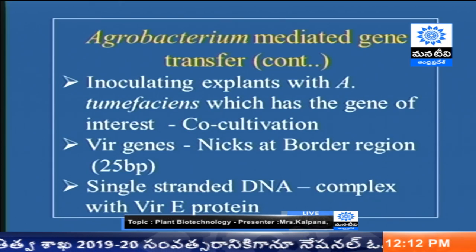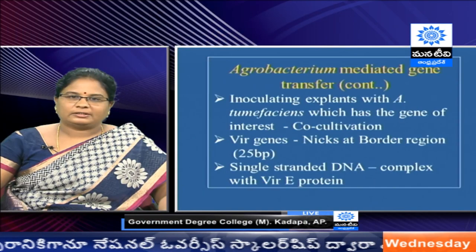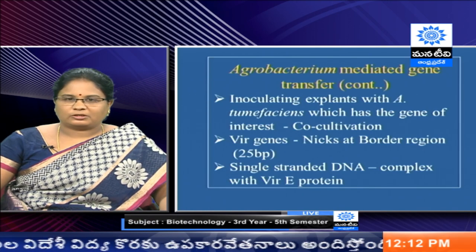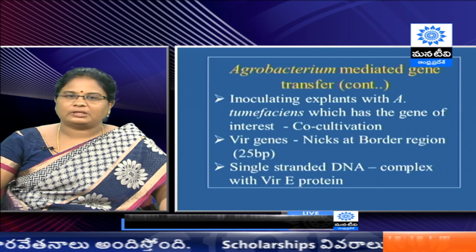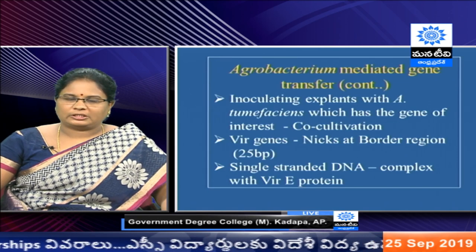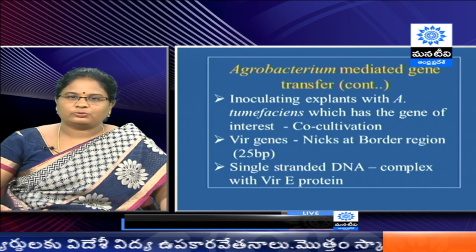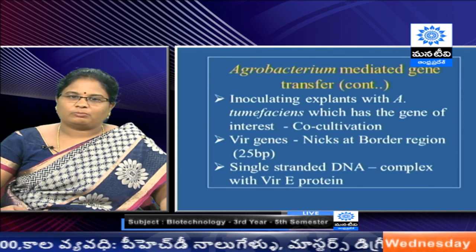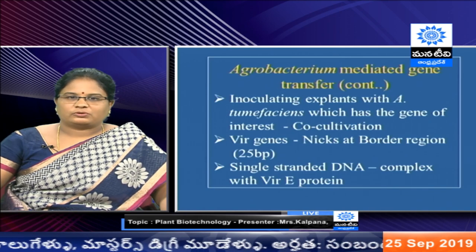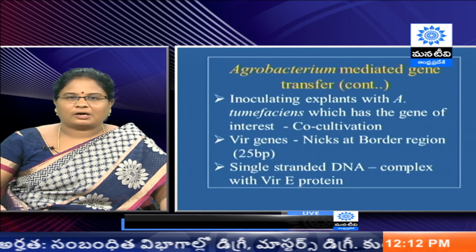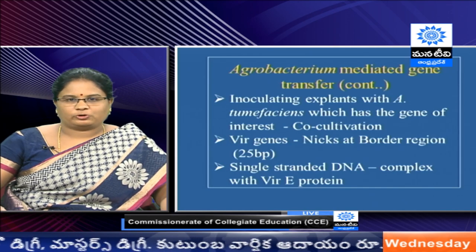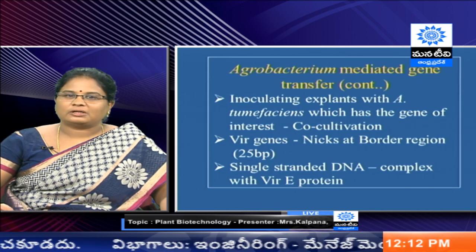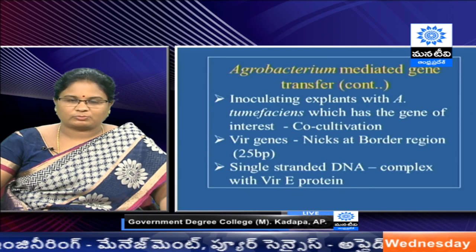Once we construct the vector using normal cloning procedures, the vector should be transferred to Agrobacterium. Now the recombinant Agrobacterium tumefaciens is ready — modified with the gene of interest. Now we have the modified Agrobacterium and the explant, which here is the protoplast — the plant cells without a cell wall. We mix these two together; this is known as co-cultivation.